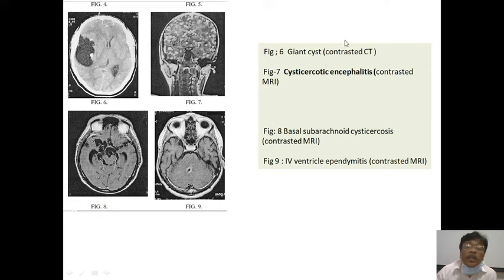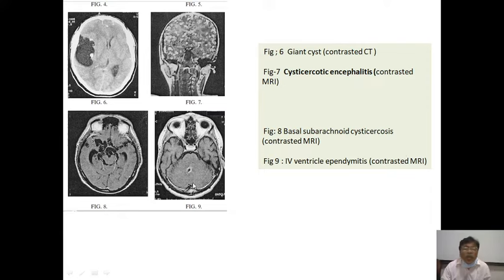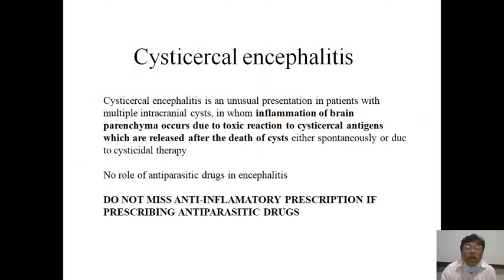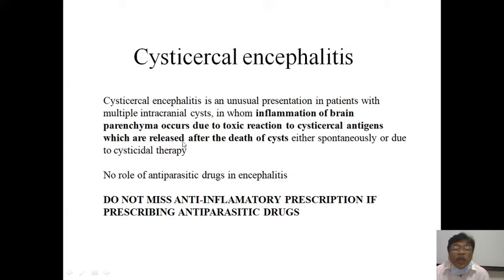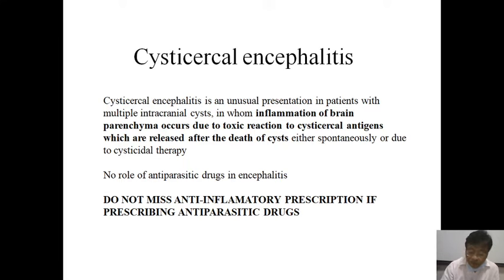A very large giant cyst — cysticercal encephalitis — can appear with multiple cysts like a starry sky pattern. We call this cysticercal encephalitis, not merely neurocysticercosis. There can also be basal, subarachnoid, and ventricular ependymitis involvement. Cysticercal encephalitis results from inflammation of the brain parenchyma due to toxic reaction of cysticercal antigens released after death of the cyst — either spontaneously or due to cysticidal therapy.